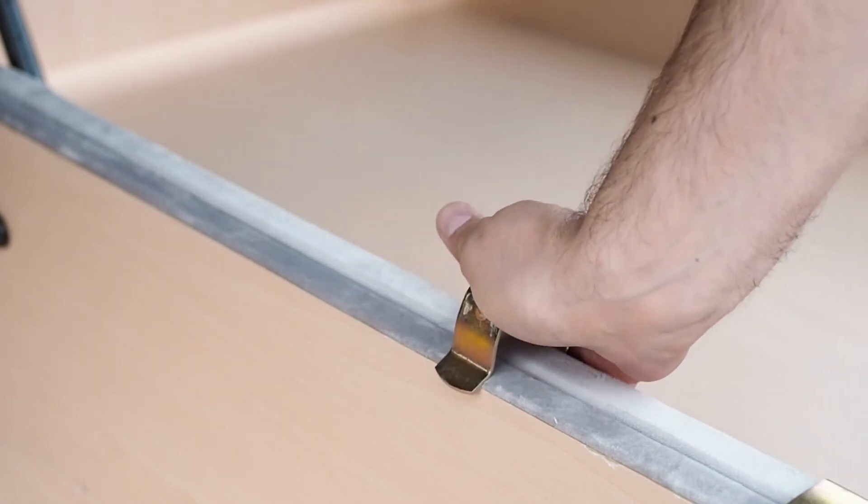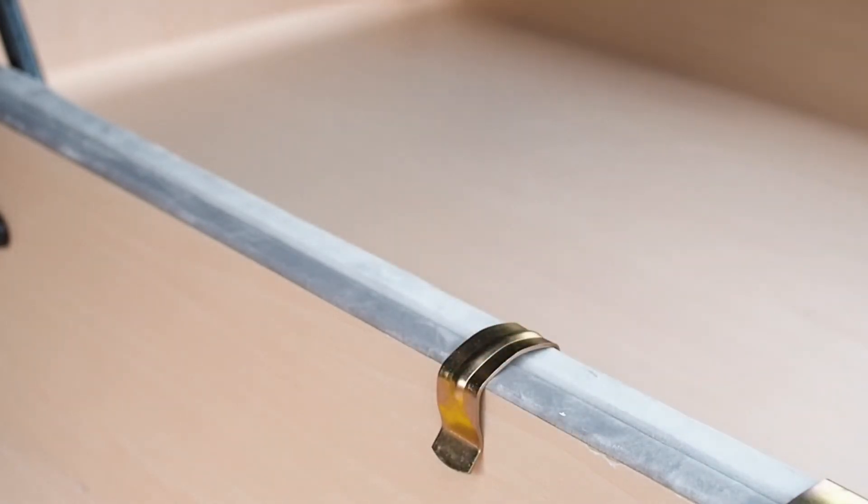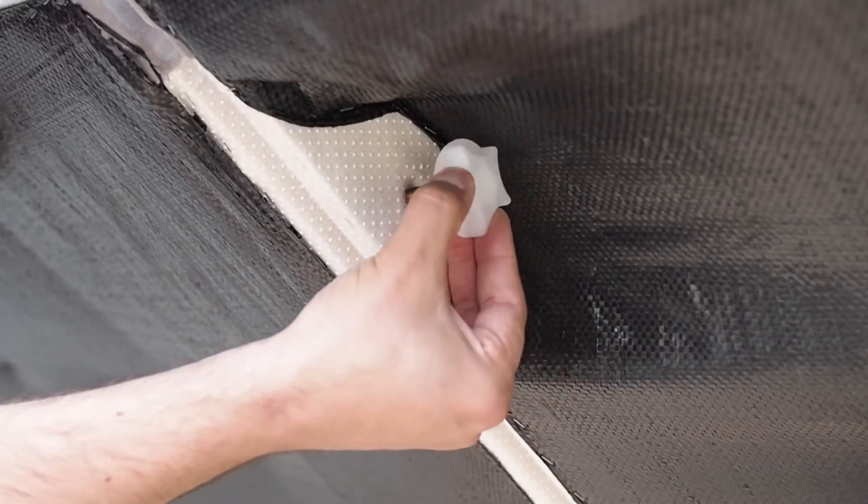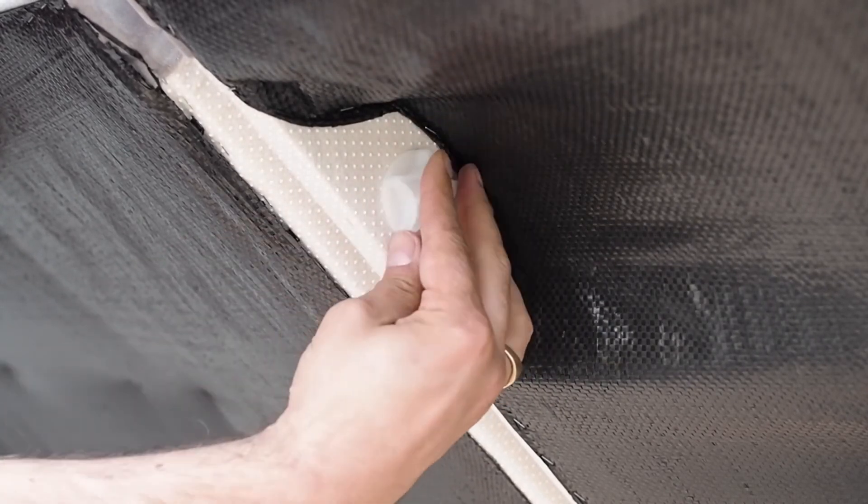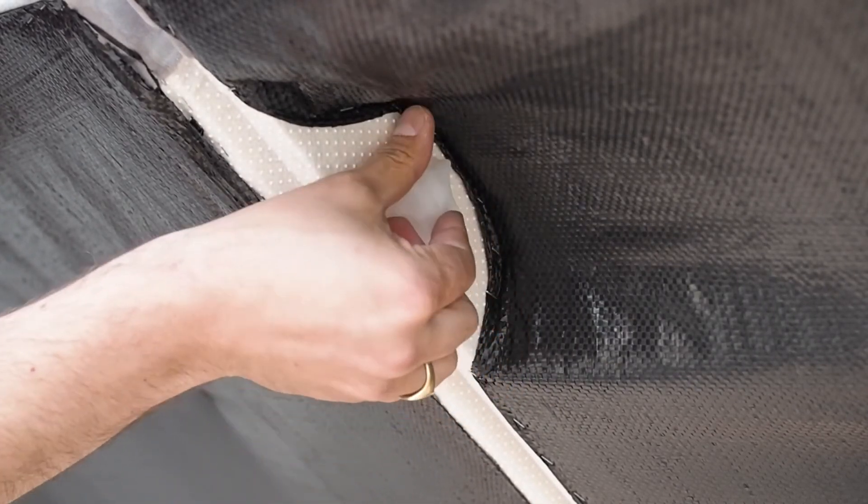Push both sections together and join using the clips provided. You need to join the lids together using the small bolt. There will be a recess on one section for the bolt to screw into.